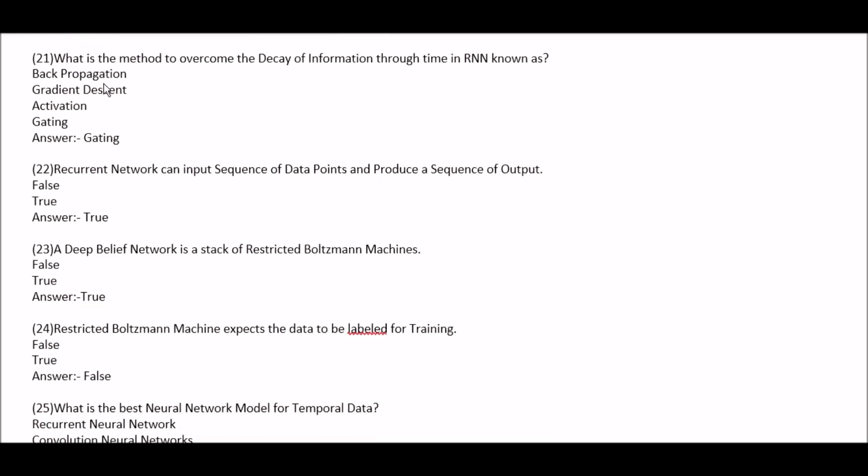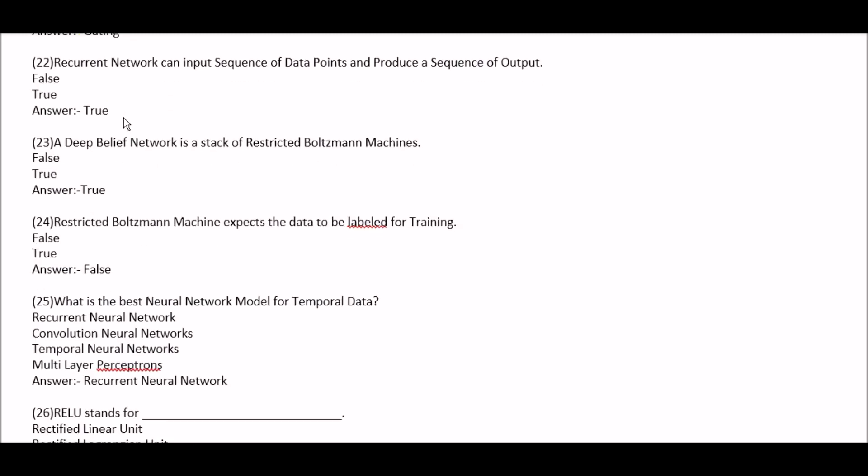What is the method to overcome the decay of information through time in RNN known as? Option A: backpropagation. Option B: gradient descent. Option C: activation. Option D: gating. Right answer is option D, gating. Question 22: recurrent networks can input a sequence of data points and produce a sequence of output — true or false? This is true.